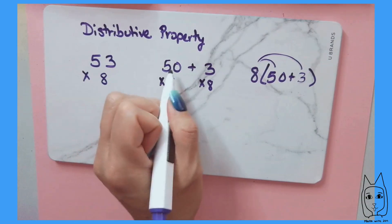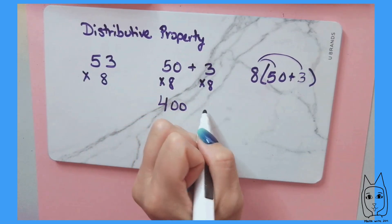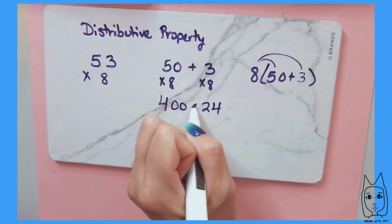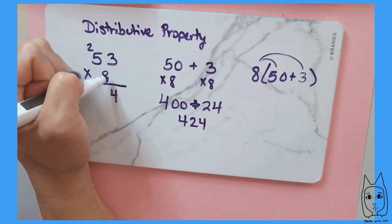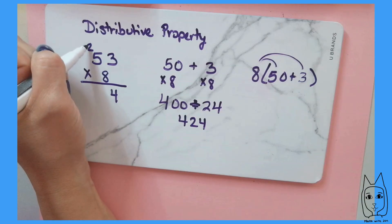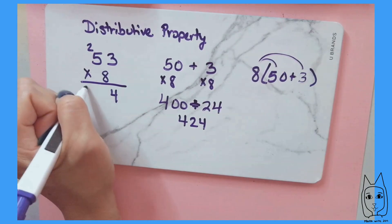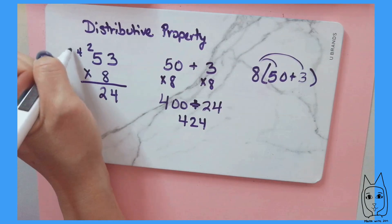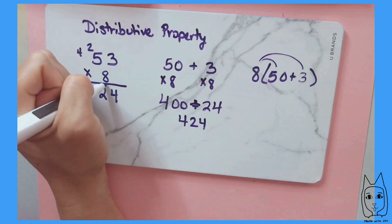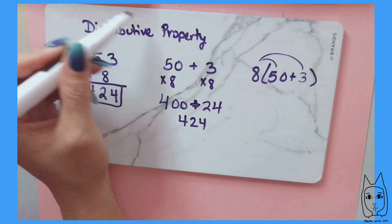So 50 times 8 is 400, 3 times 8 is 24. 400 plus 24 is 424. 8 times 3 is 24, so I'm going to put down the 4, carry the 2. 8 times 5 is 40, plus the 2 that I carried over is 42. So I'm going to also carry over the 4 for the 400, and that's going to be 424. So the distributive property can also be used in multiplication.